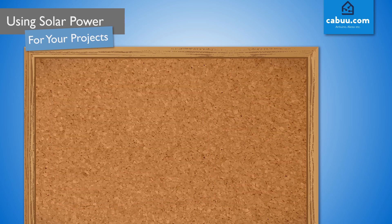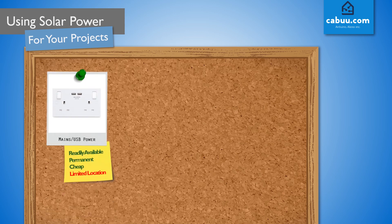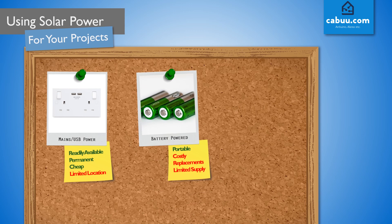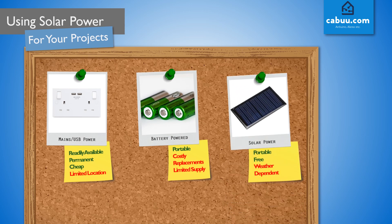When it comes to power options for electronics projects there are usually three options. Using mains power via readily available wall or USB sockets provides a permanent and cheap supply of power, but we are limited by cable to such locations. Batteries offer portability but provide limited supply, and replacements can prove costly over time. Solar power also offers portability at no expense, but it will only work outside and when there is sufficient sunlight.